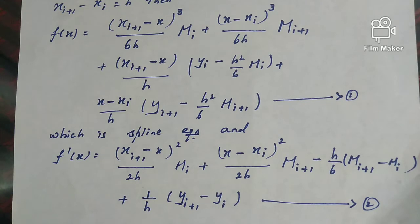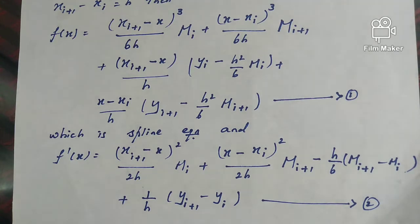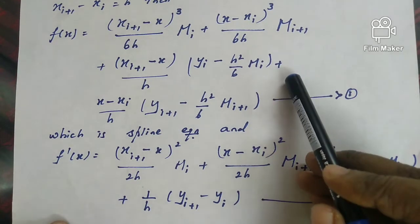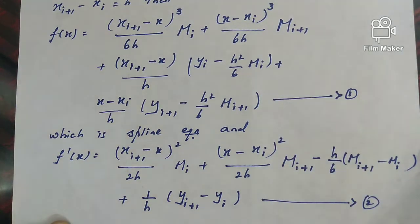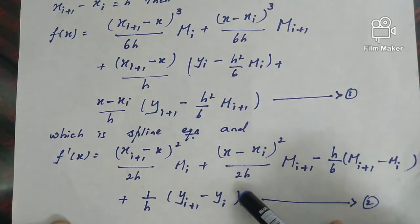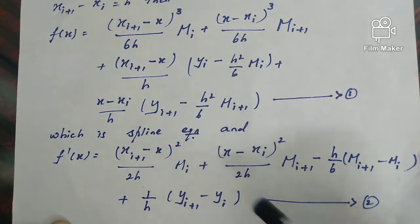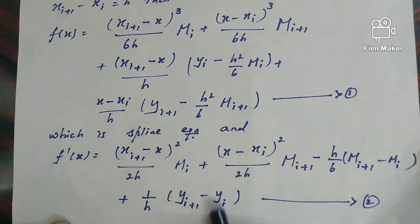When solving a problem, we find the spline equation for the given data. If asked to find the cubic spline and f'(x) on an interval such as 1 to 2, we first find f(x) using the spline formula, then differentiate to get f'(x). Equation 2 can also be used directly if the formula for f'(x) is asked explicitly.